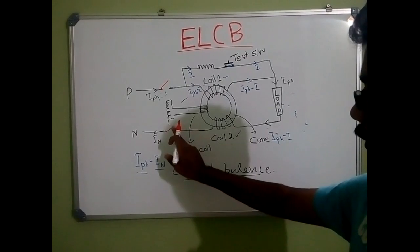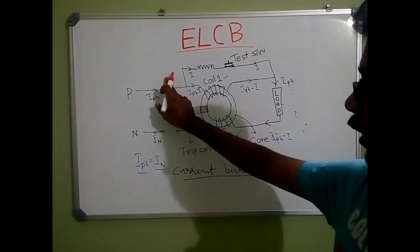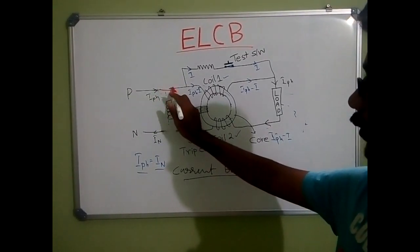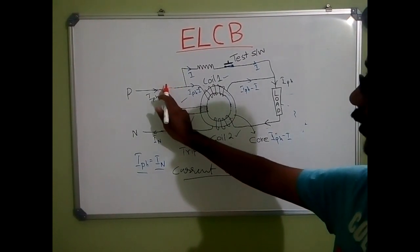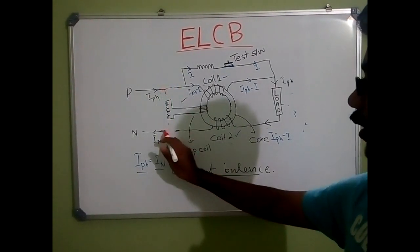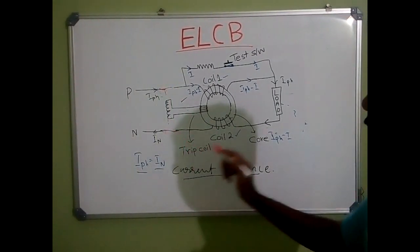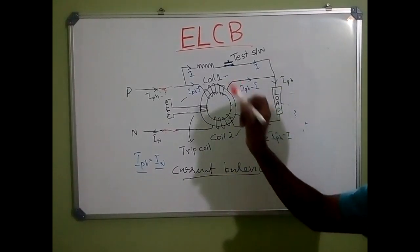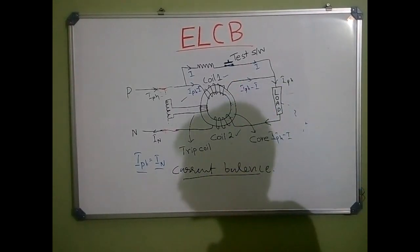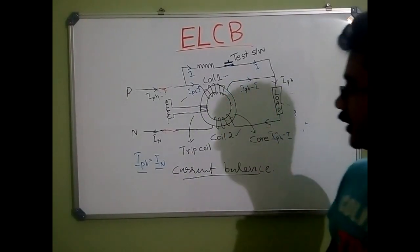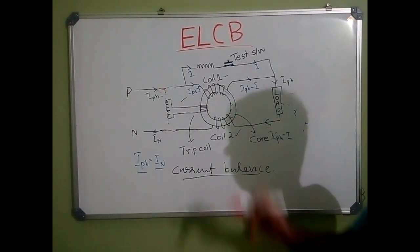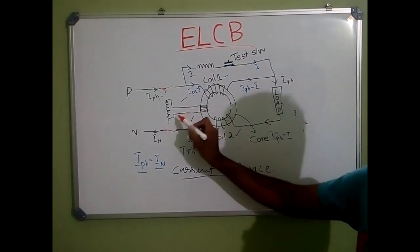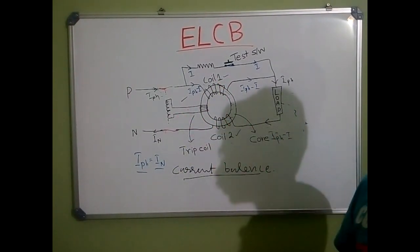Now we are going to look at what an ELCB consists of. An ELCB consists of mainly two parts: one is the magnetic core and the other is the coil. Three coils exist in this ELCB — Coil 1, Coil 2, and the trip coil.